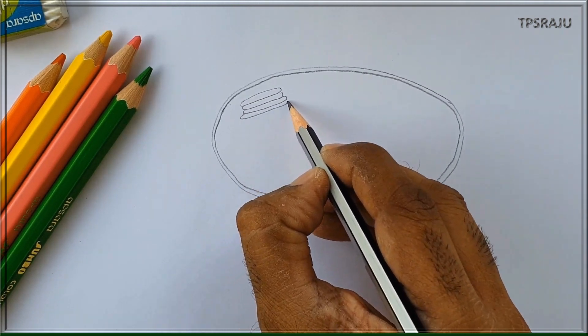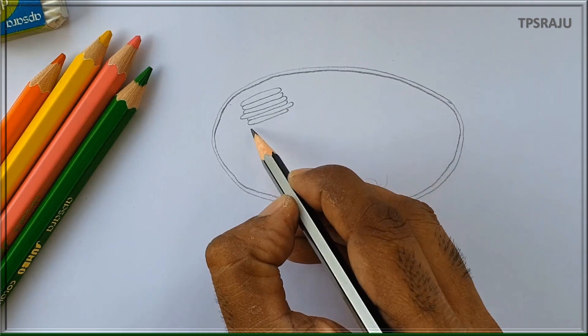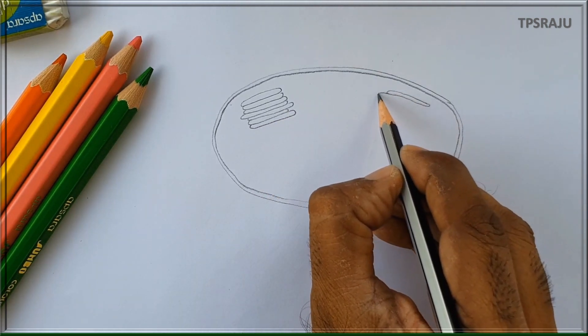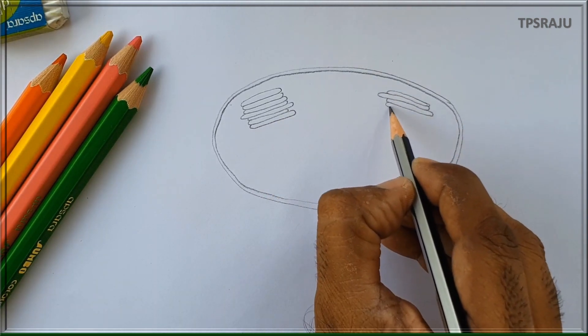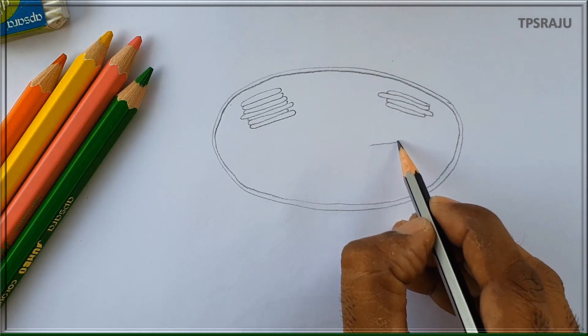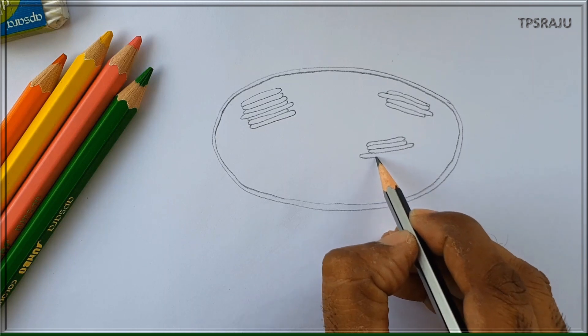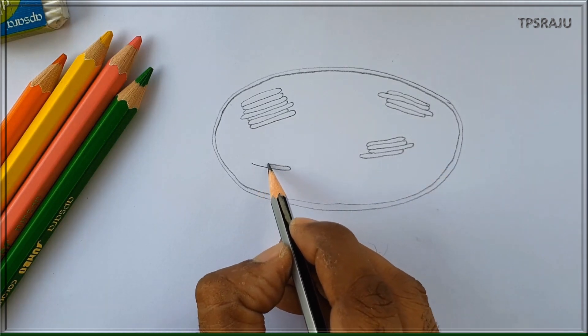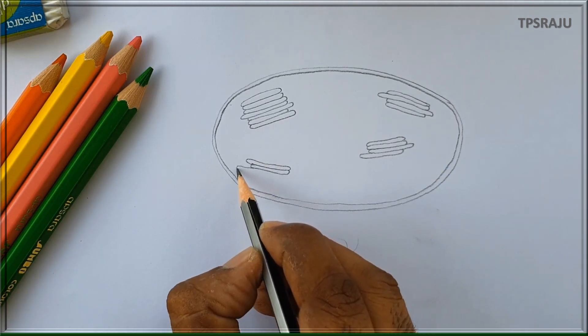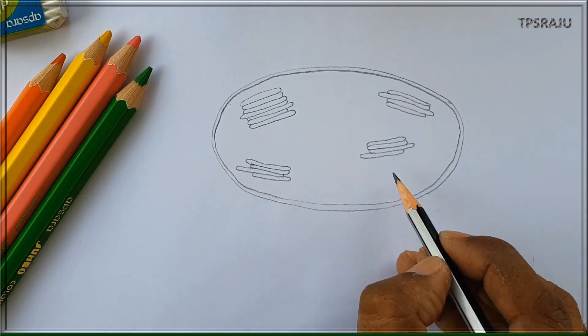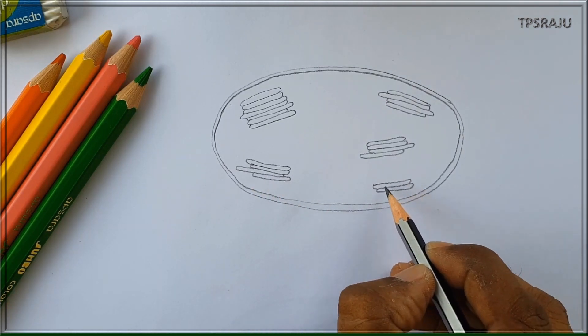Inside the chloroplast, there are stalk-like thylakoid membranes present. These are called granum or grana thylakoids. These are the sites for light reactions of photosynthesis.